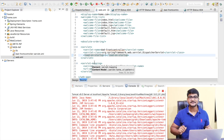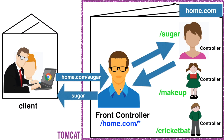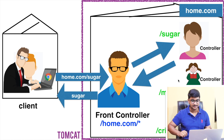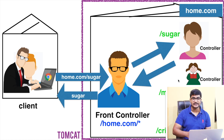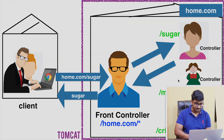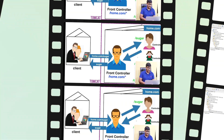Let's create a few controllers — a MomController, SysController, and BroController — and map them to URLs like /sugar, /makeup, and /cricket-bat. This is a simple, fun example that will make you comfortable with Spring MVC. Once your basics are clear, you can create real-time examples on your own.